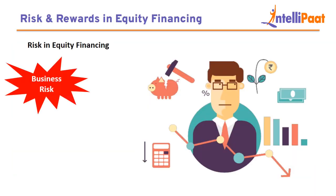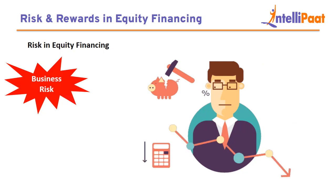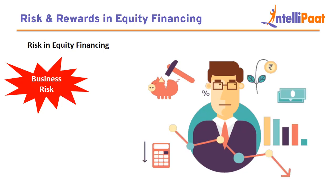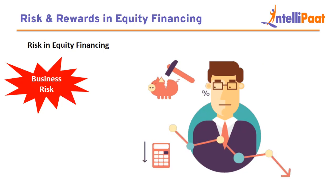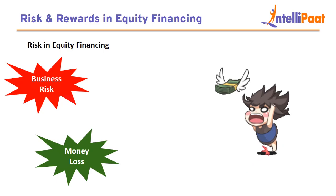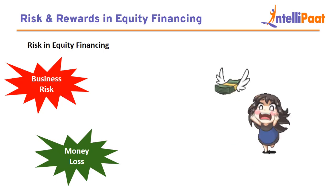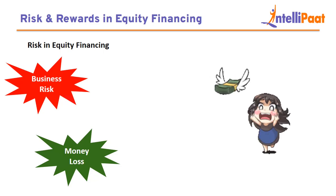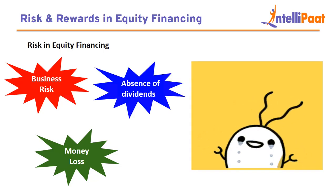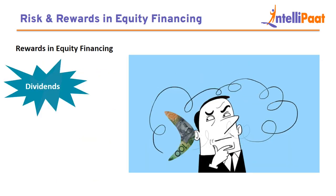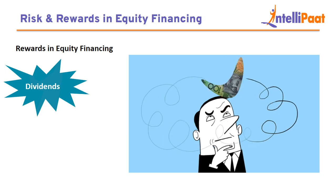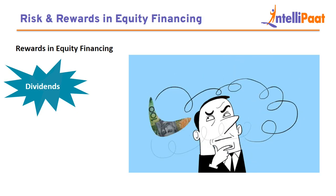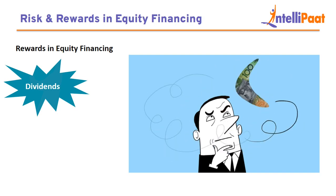Risk and rewards in equity financing. Risks: business risk — when investing in stock, the risk associated with the underlying firm's operations must be assumed. A company's earnings and growth prospects can be impacted by competition, changes in market demand, technological advancement, government changes, and managerial decisions. Money loss: the return on investment is not guaranteed by equity financing. If a company has financial problems or is unable to make a profit, shareholders might lose some or all of their money. Absence of dividend: while some companies choose to provide dividends to investors, others may prefer to reinvest profits back into the firm. Rewards: profitable companies may choose to distribute dividends to shareholders, which are a reliable source of income and can improve overall investment performance.